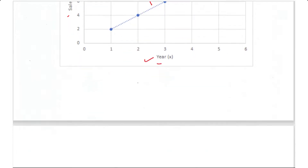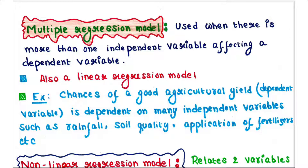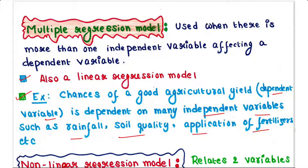Next is the multiple regression model. This model is used when there is more than one independent variable affecting a dependent variable. Multiple regression model is also a linear regression model. For example, the chances of a good agricultural yield — which is the dependent variable — depends on many independent variables such as rainfall, soil quality, application of fertilizers, etc.